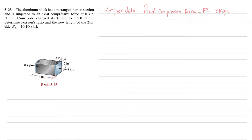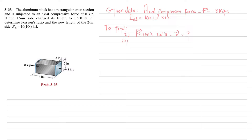The given data is: axial compressive force P = 8 kips, and modulus of elasticity of aluminum E = 10 × 10³ ksi. We need to find: first, the Poisson's ratio (represented as ν), and second, the new length of the 2-inch side.